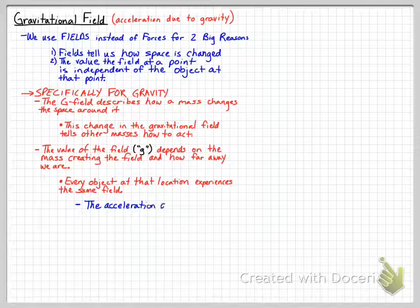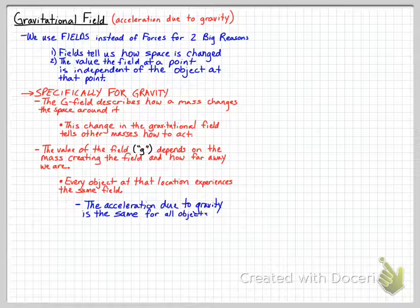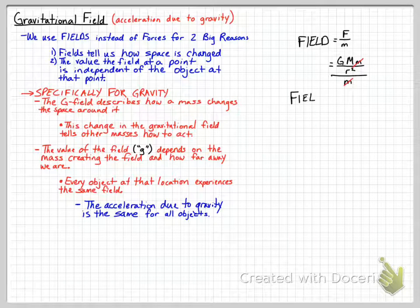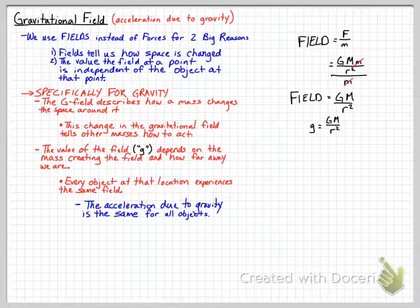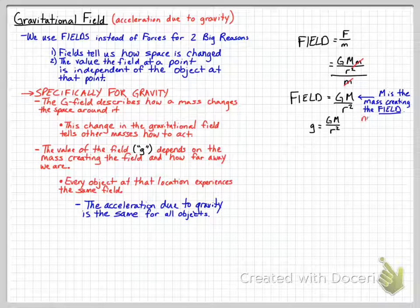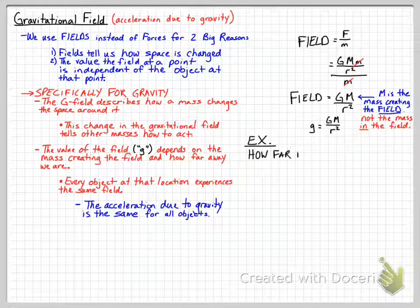Every object at the same location experiences the same gravitational field value. From our earlier table, the gravitational field g = F/m. Substituting the gravitational force equation: g = G·M·m / (R²·m), the small mass of the object in the field cancels out, leaving g = G·M / R², where capital M is the mass of the object creating the field — not the mass in the field. So the lowercase g tells us the acceleration due to gravity based on the mass creating the field and the distance R.